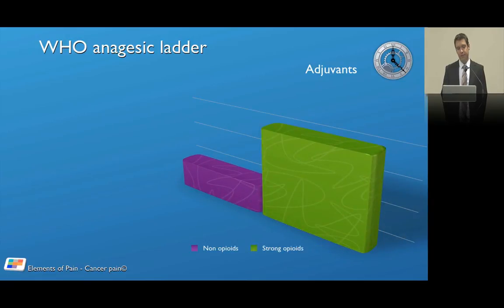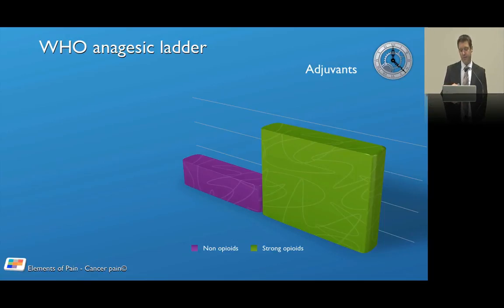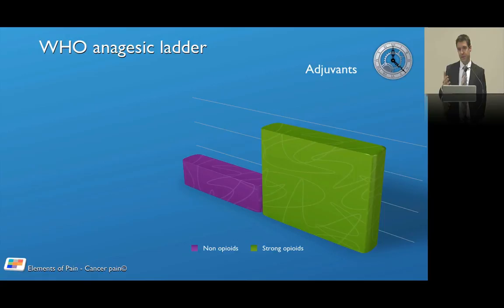Some have recently argued that the WHO ladder may need to change — that weak opioids may need to be taken out of the equation, and it might be worthwhile moving from non-opioids straight to strong opioids. Not really a ladder, almost like an elevator, because strong opioids seem to be the mainstay of patients' requirements.